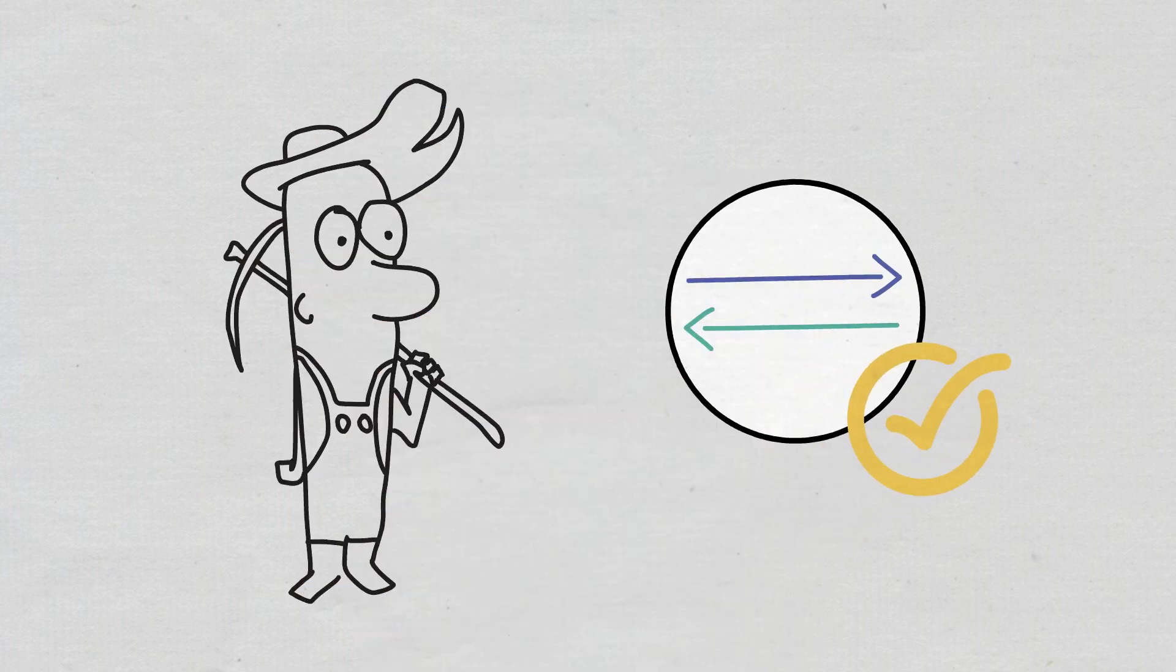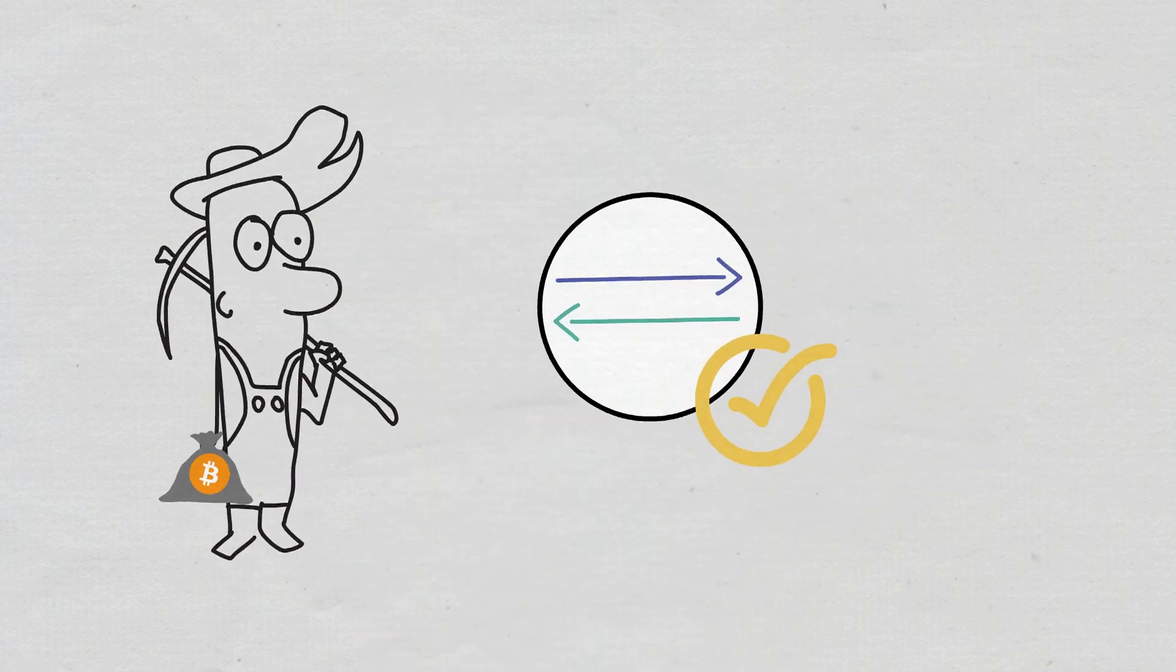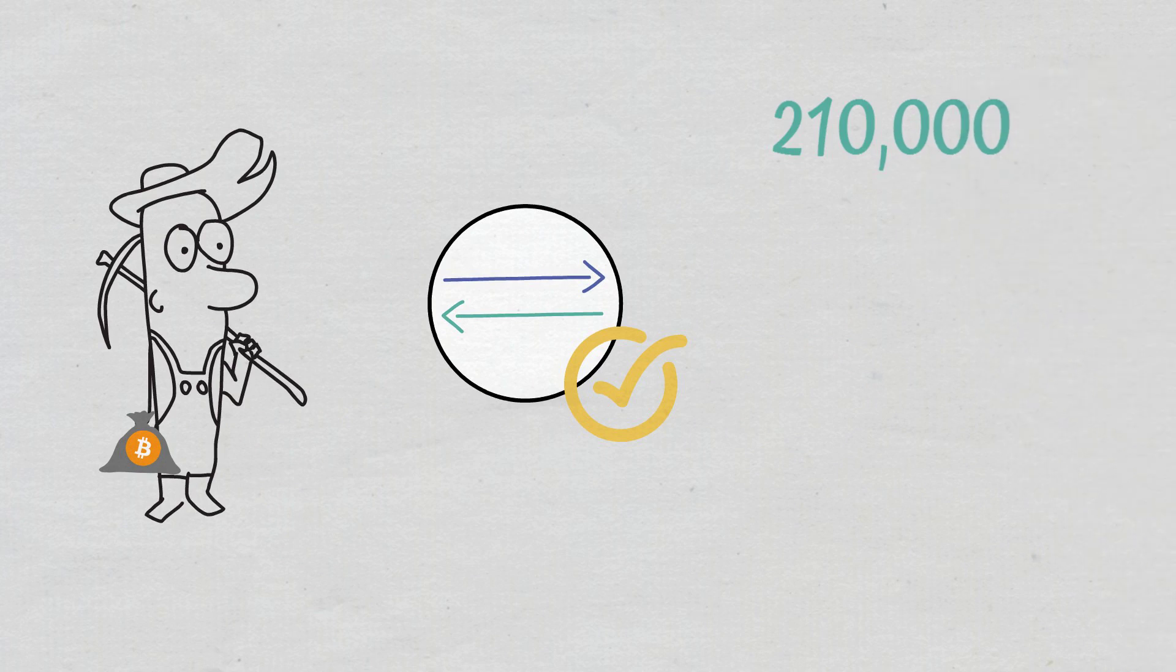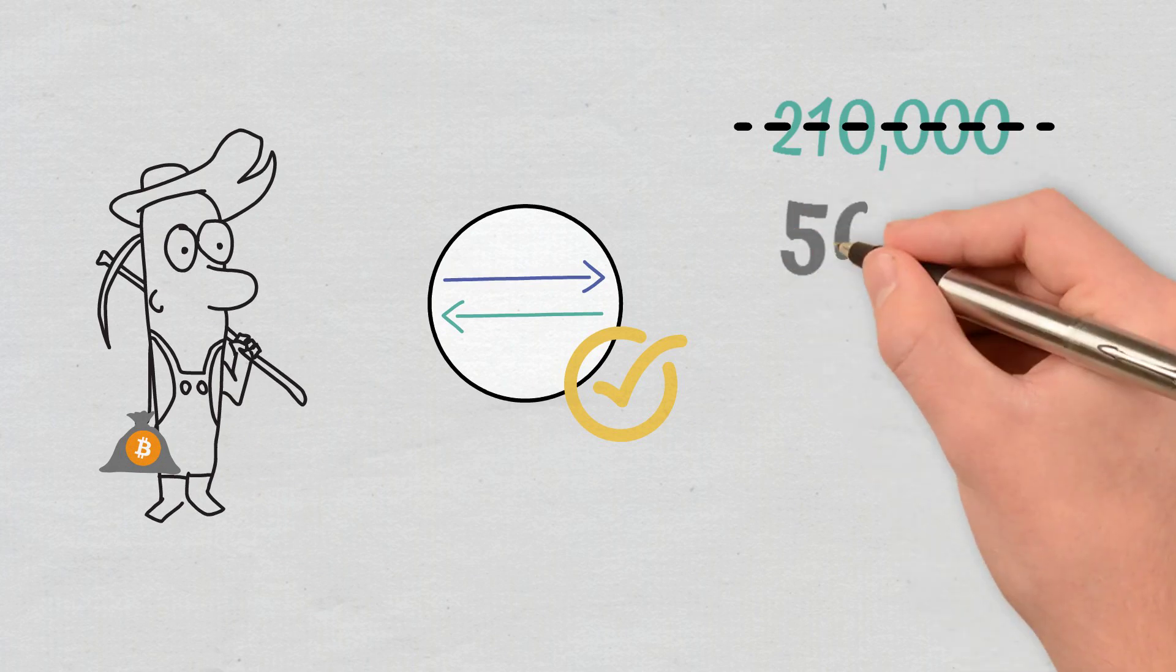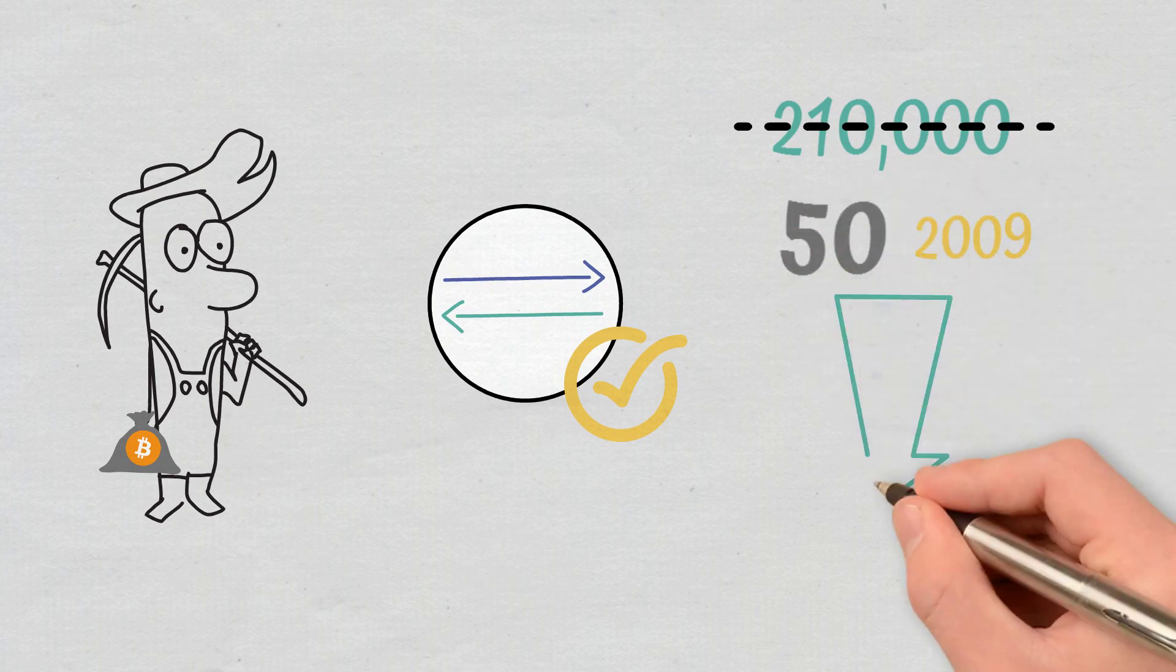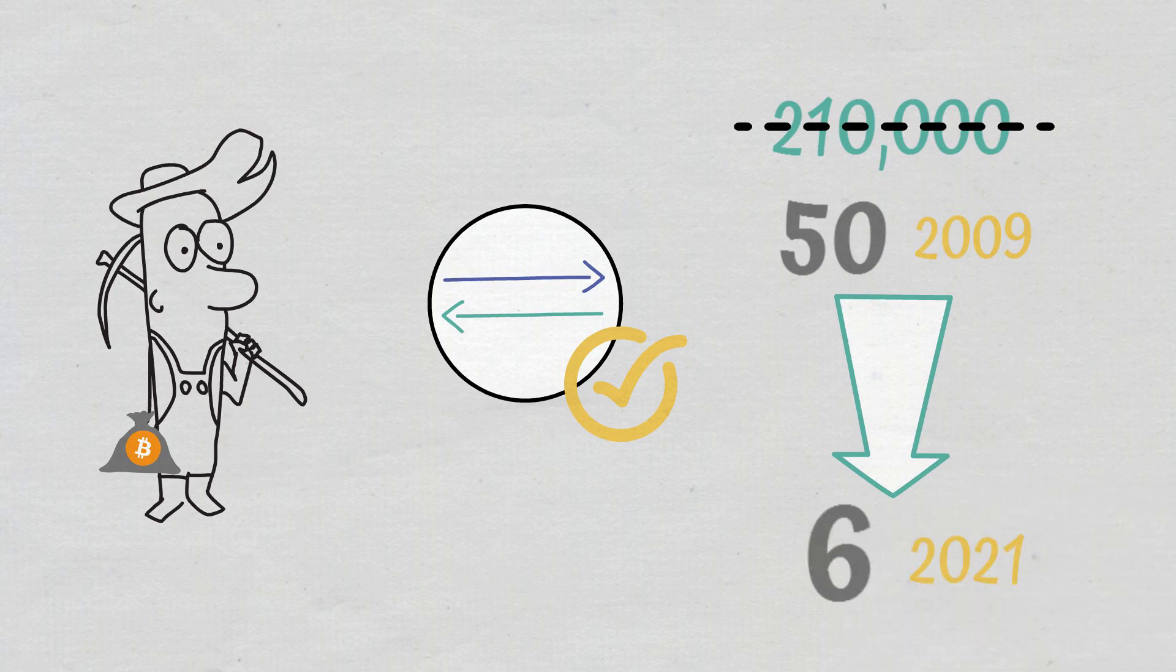In return, a miner receives some Bitcoin, though every 210,000 blocks the reward is halved. So if you received 50 Bitcoins for mining in 2009, now the reward is worth only 6 Bitcoins.